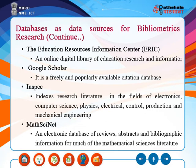MathSciNet is an electronic database of reviews, abstracts, and bibliographic information for much of the mathematical science literature. Over 100,000 new items are added each year, most classified according to the Mathematics Subject Classification. MathSciNet contains over 2.8 million items and over 1.6 million direct links to original articles. Reference lists are collected from approximately 500 journals, and citation data for journals, authors, and articles is provided. This web of citations allows users to track the history and influence of research publications in mathematical science.